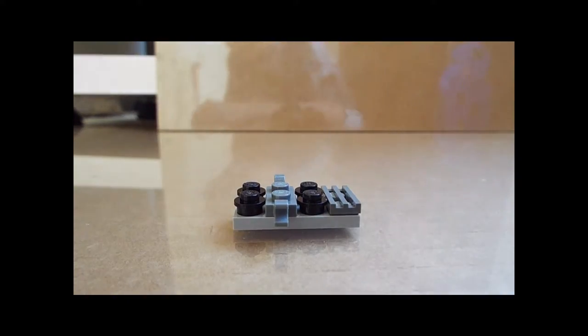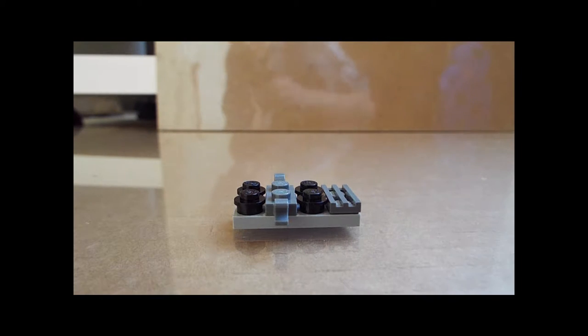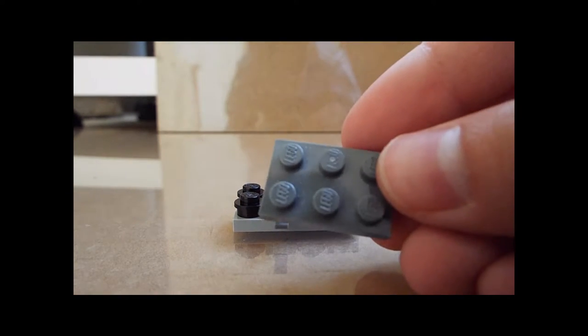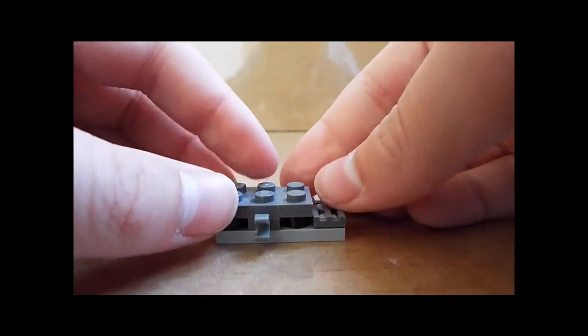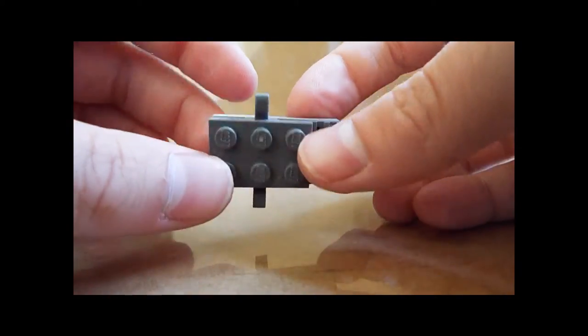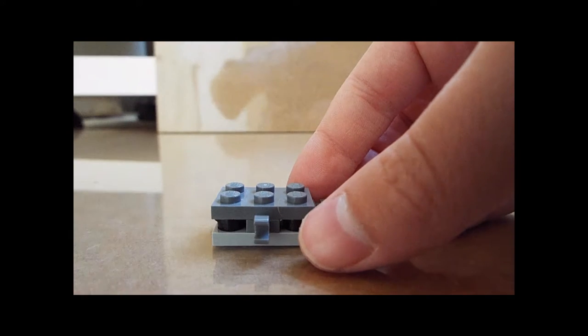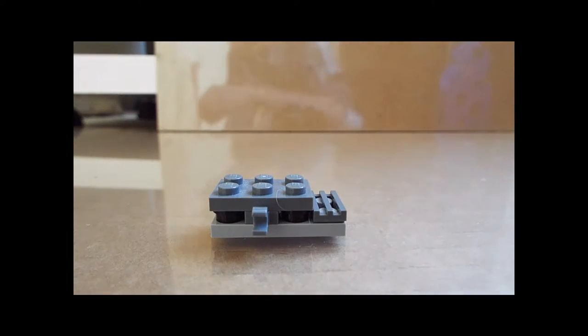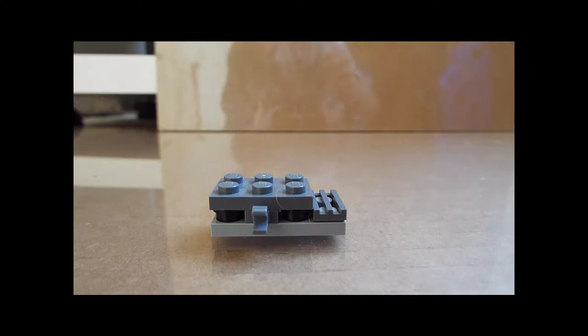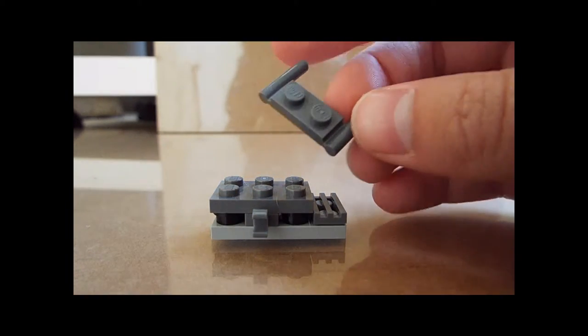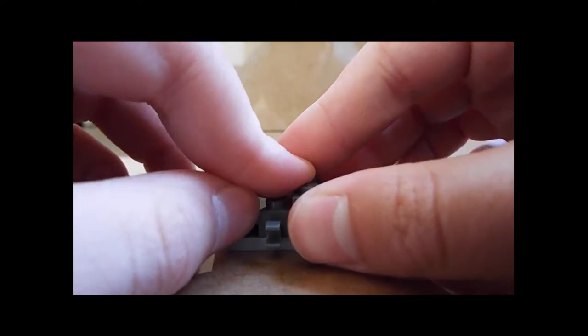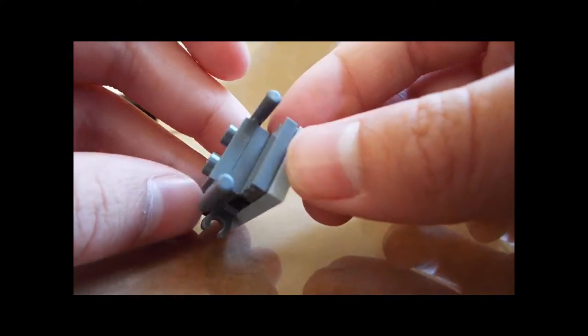Now you're going to take this piece right here and put this on top of these three. Like that. Next, you're going to take this one. The arm's coming out. Put this on the front, right here, next to this one.